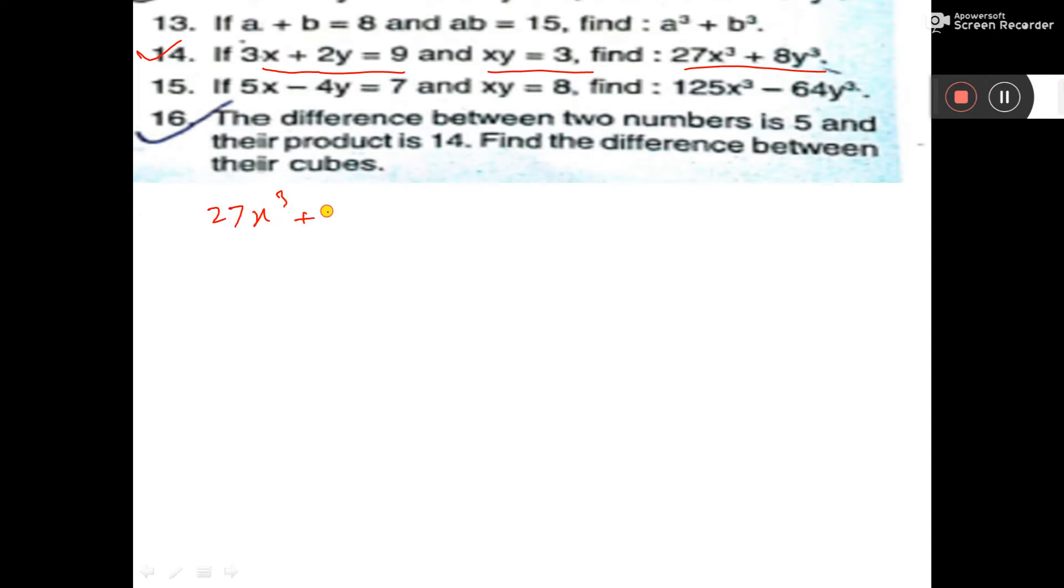27x cube plus 8y cube. So this one we can write as 3x whole cube plus 2y whole cube. Now a cube plus b cube formula.